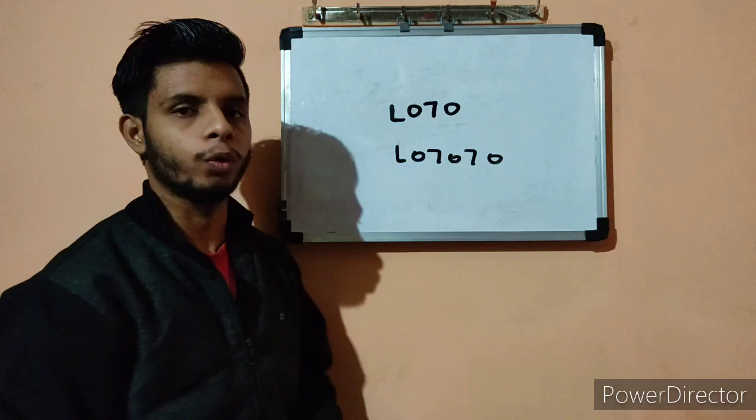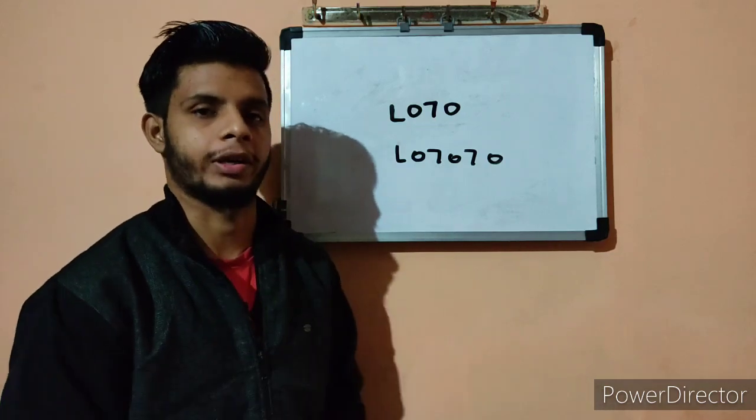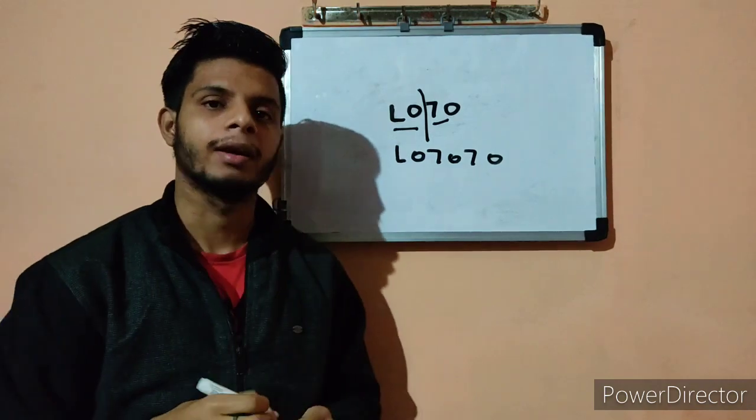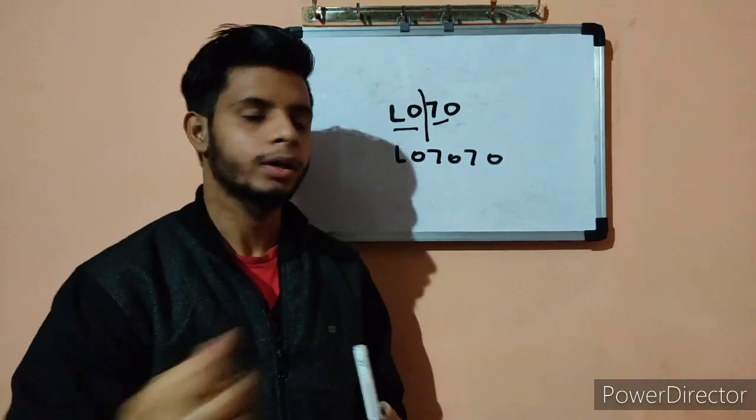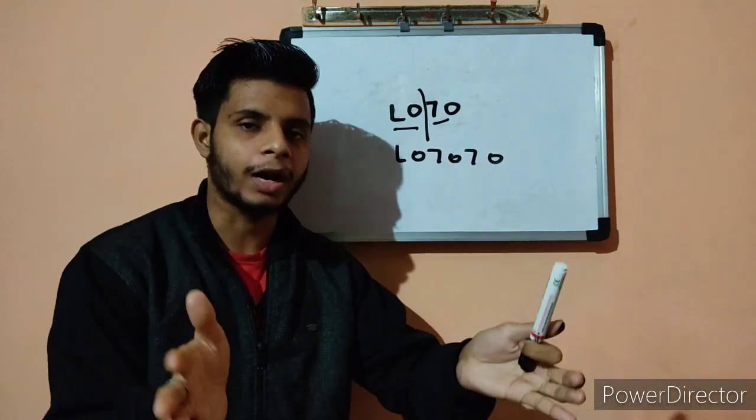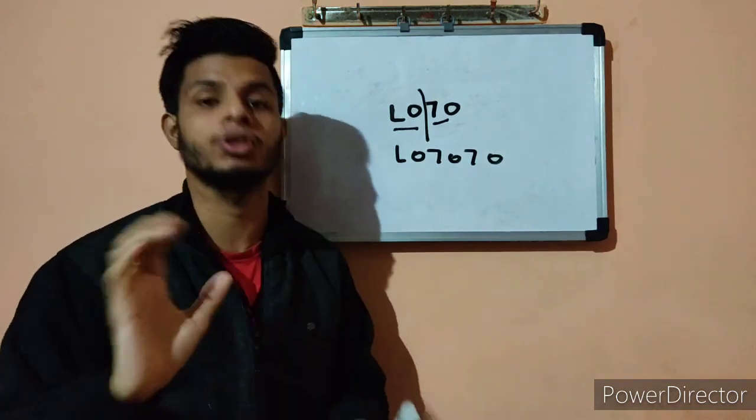Basically when we go to LOTO, these are two separate components. LO is different, TO is different. LO means lockout, TO means tagout. So these two are different, and when these two lockout and tagout got combined they will form one procedure.